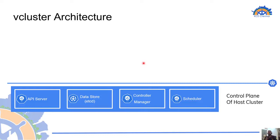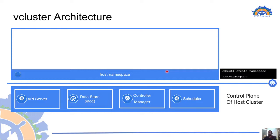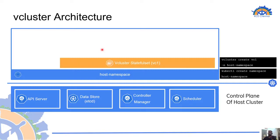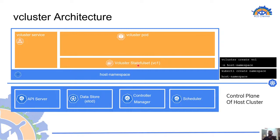What did we do first? We took a regular Kubernetes cluster — the host cluster. Then we created a namespace called host-namespace on top of it. Then using the vcluster CLI we created a vcluster called VC1 inside host-namespace. We also saw the components running inside the host namespace. The vcluster has two main components: a StatefulSet called VC1 with an associated Service. The StatefulSet creates a pod with a single replica, and inside this pod is where the vcluster really lives. There are two containers in the vcluster pod.